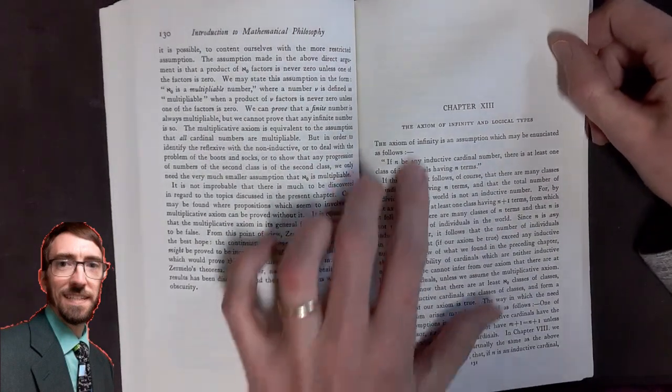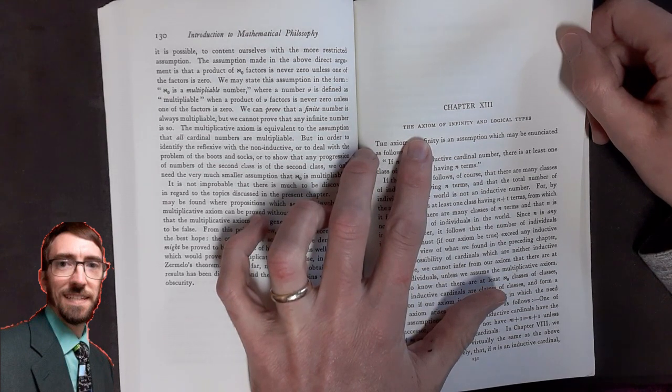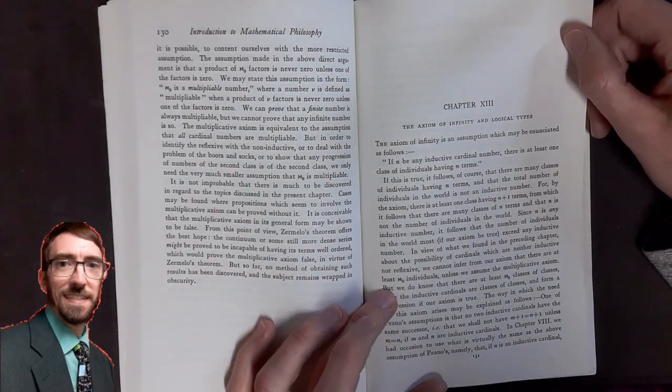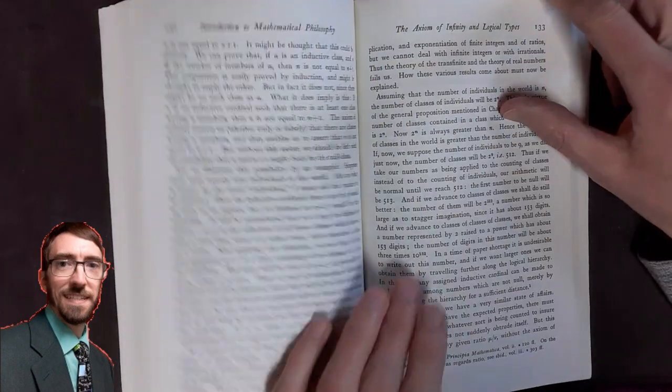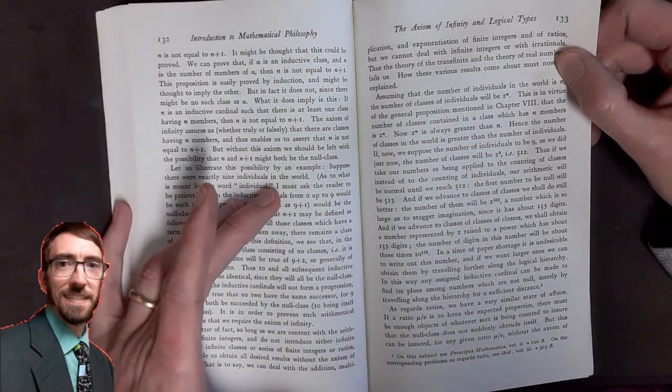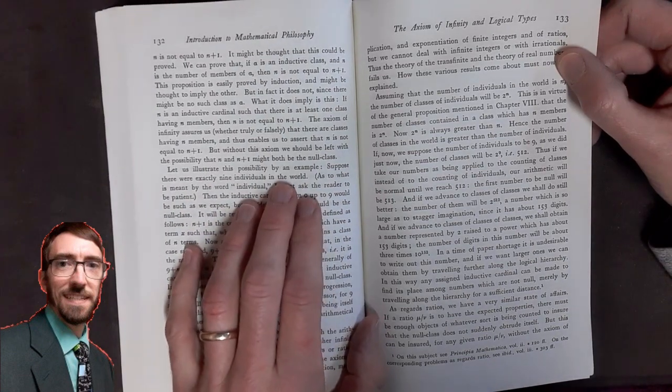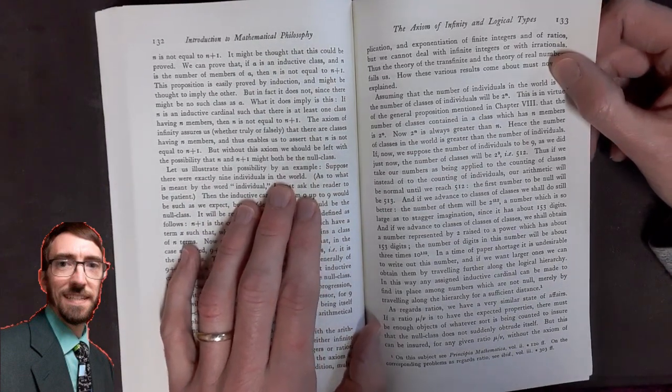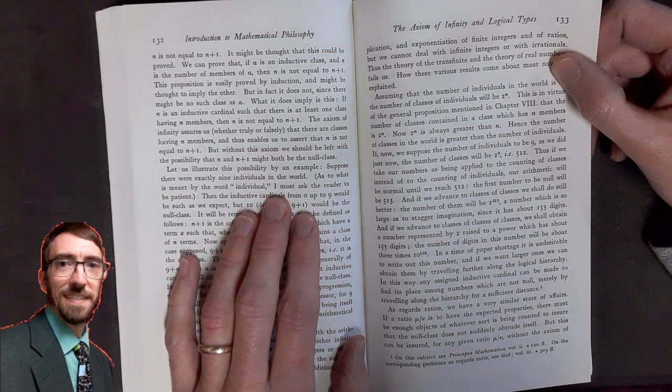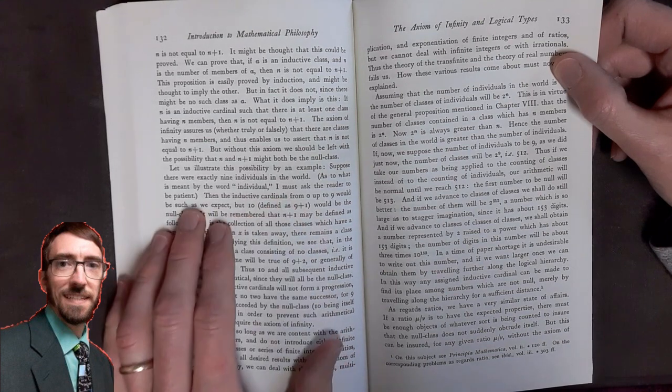As we get to chapter 13, we see he mentions the axiom of infinity in the chapter title. His illustration for showing what he calls an arithmetical catastrophe starts here on page 132. Suppose there were exactly nine individuals in the world. As to what is meant by the word individual, I must ask the reader to be patient.